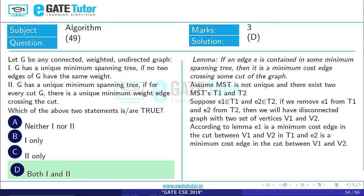According to the lemma, E1 is the minimum cost edge in the cut between V1 and V2 in T1 and E2 is the minimum cost edge cut between E1 and V2 in T2.